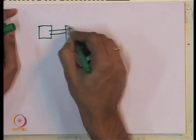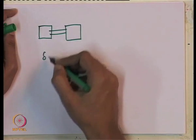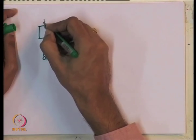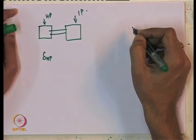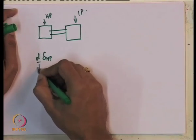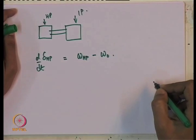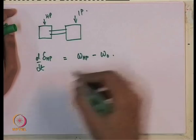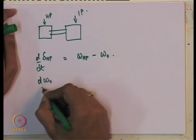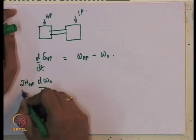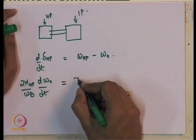If I am going to analyze this system, remember what are the states? The states are the angular position of all the masses and the speeds of the masses. If you have two masses connected by a shaft — say the HP turbine and the intermediate pressure turbine of a steam turbine generator system — you will have d(delta_HP)/dt equal to omega_HP minus omega_naught.